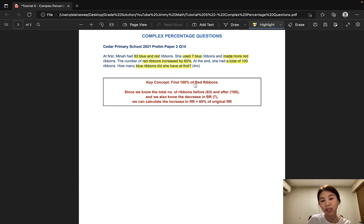So what makes this question complex is that we are comparing two parties, the blue ribbons and the red ribbons. To make things a little more confusing, the number of blue ribbons decreased by 7, and the number of red ribbons increased by an unknown amount. So the key concept is to find 100% of red ribbons.